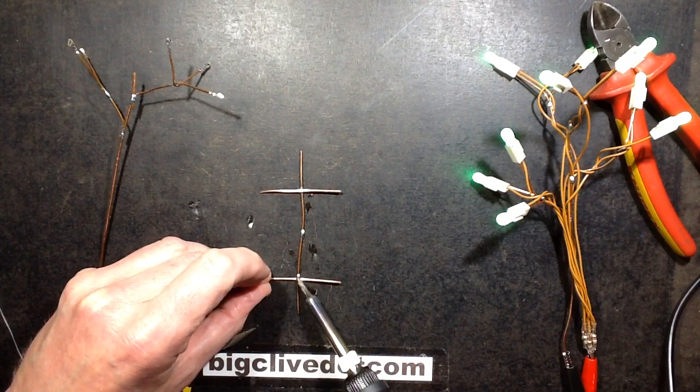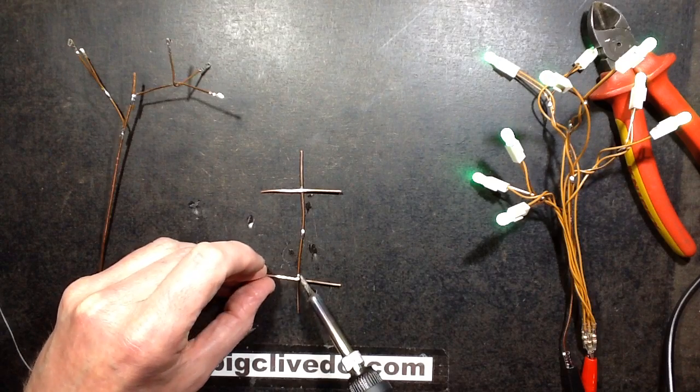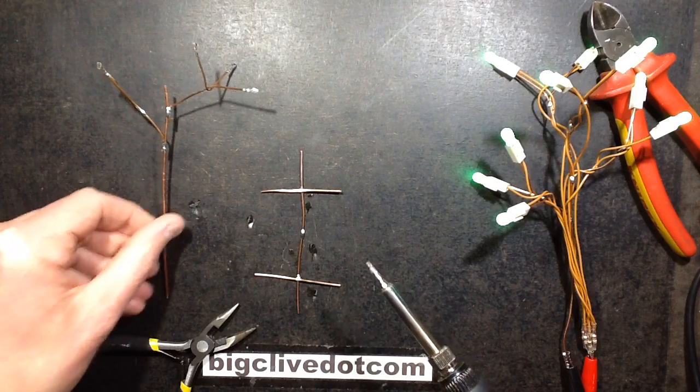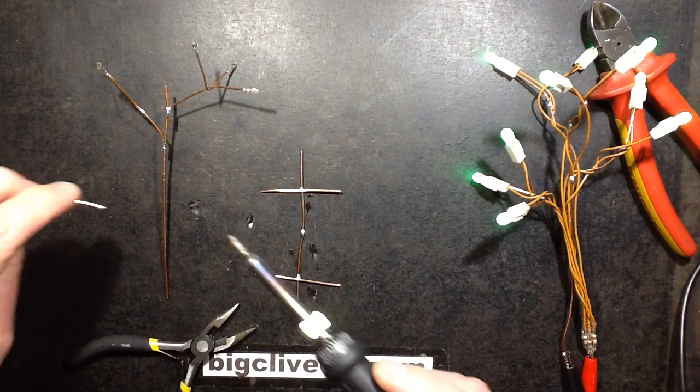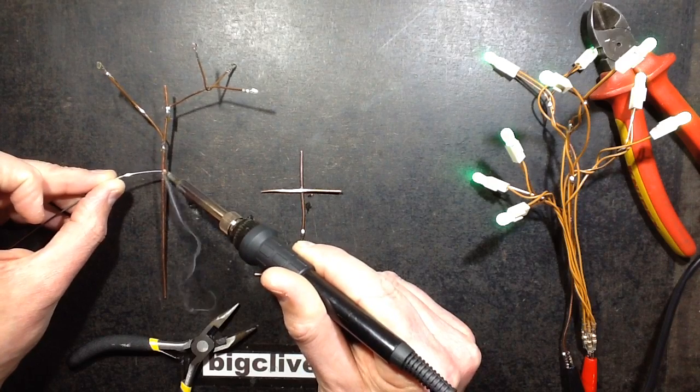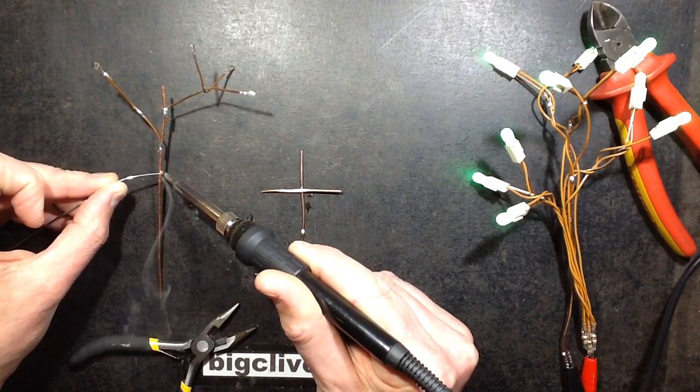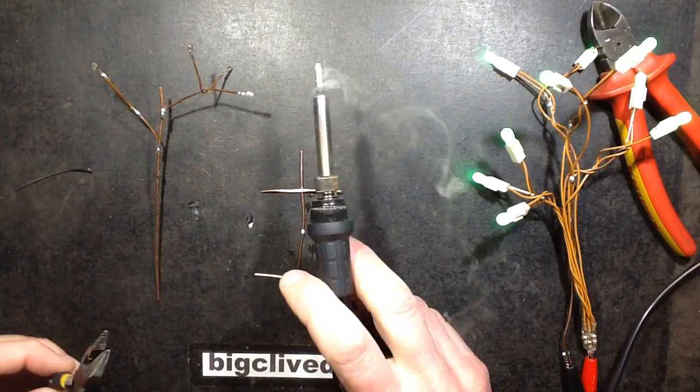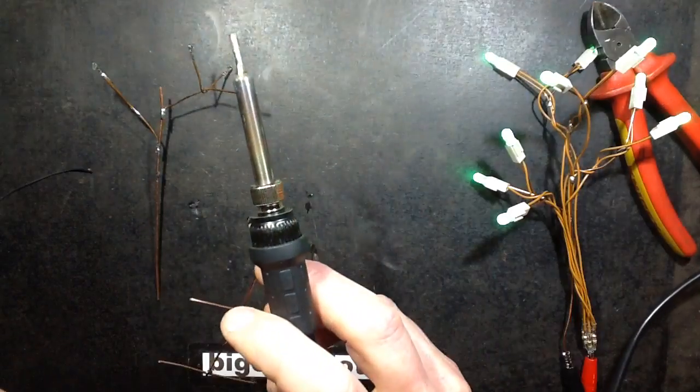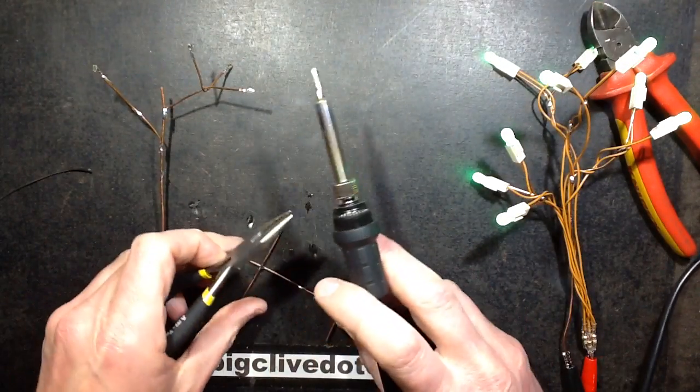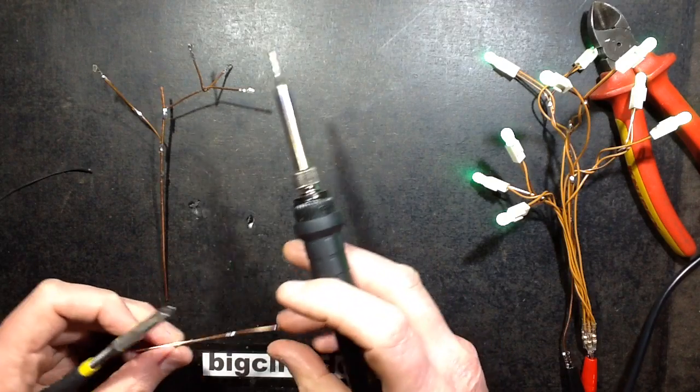Noting that these wires get very hot while you're soldering them because copper is a very good conductor of heat. Now the idea was that I could then just add another bit on here. Let's see how hot this is going to be.